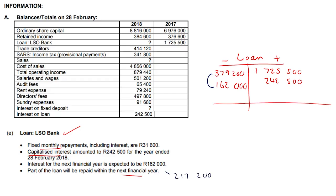If you totalize both sides you get 1,968,000. We're just missing the current portion of the loan, which is 217,200. That 217,200 factors in the interest for next year as well. You can plug in 217,200 directly, or calculate the difference between 217,200 and 162,000 and plug that in — you can choose either approach.